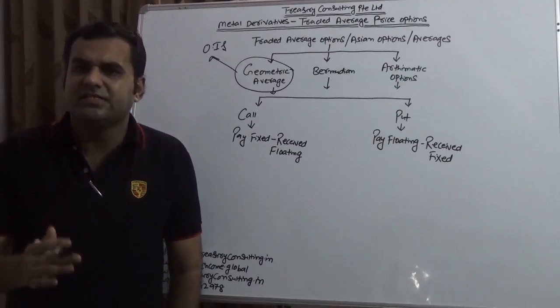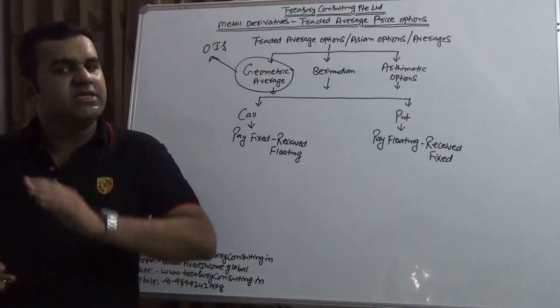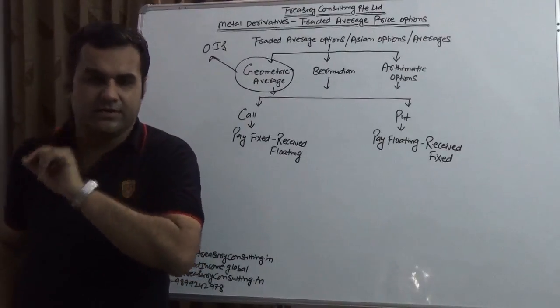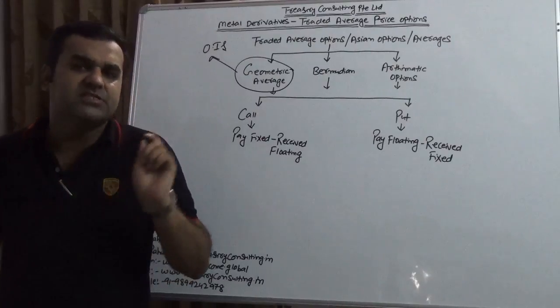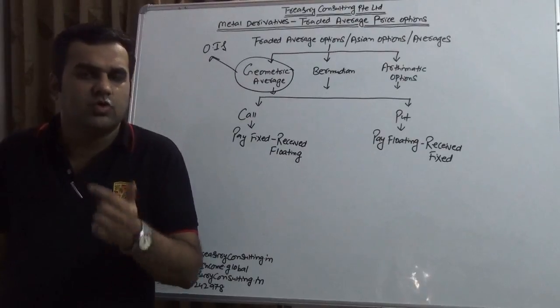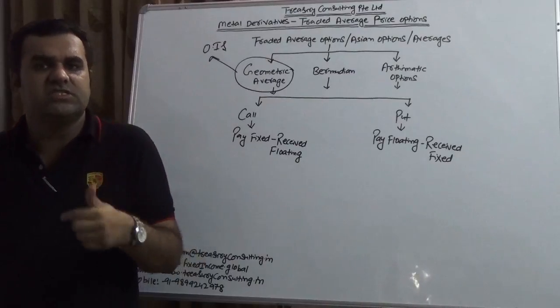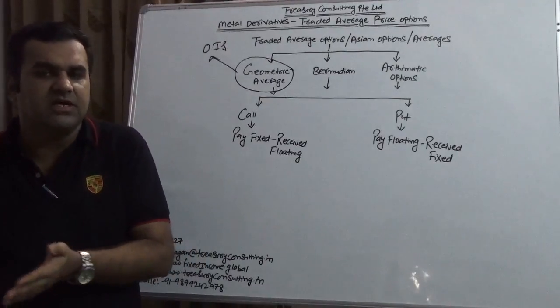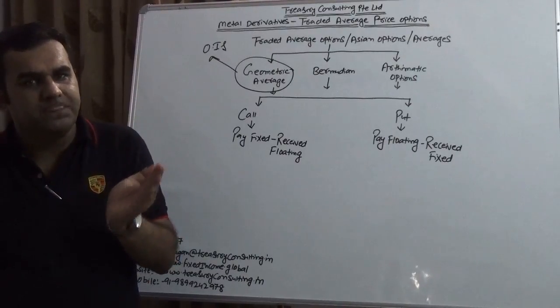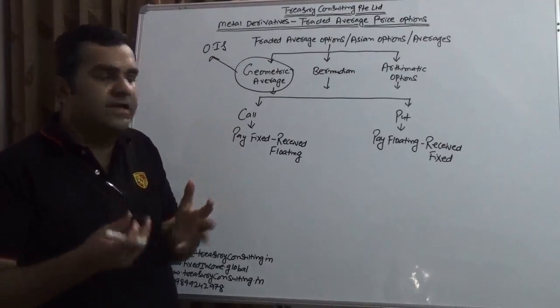If you've watched our videos on overnight index swaps, you know the methodology to compute average uses geometric. But in OIS there is no option—you have to go with geometric. Here things are not clear, so it's not black and white because it's an OTC contract, not a futures contract. OTC stands for over the counter, so it's between two parties. Of course it will be settled using LME Clear, which is a clearing platform of London Metal Exchange. But the terms and conditions have to be over the counter.